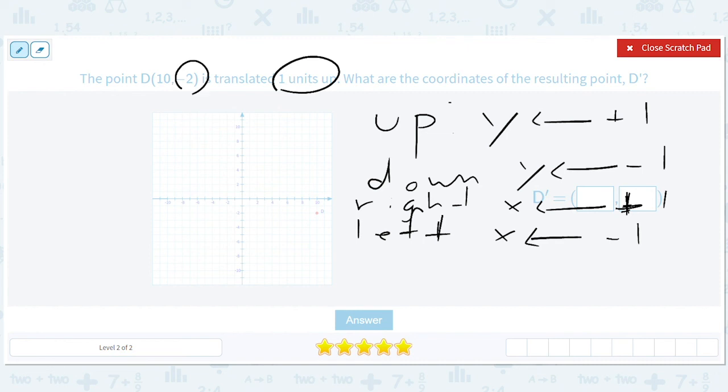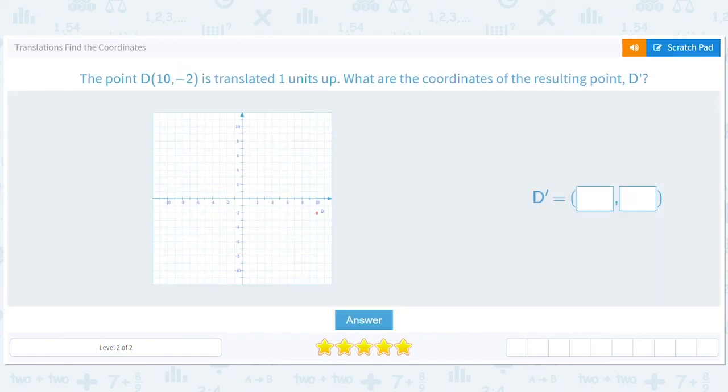Now it's not always one. It's whatever the number is. If you move up three units, you'd add three to the one. So here we're going to add one to negative two. And that's going to give us ten comma negative one, or this point.